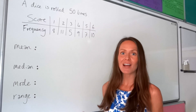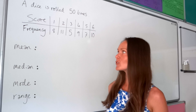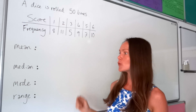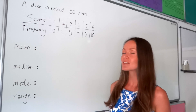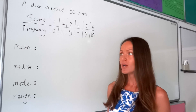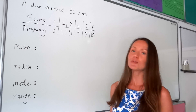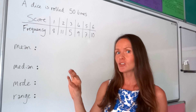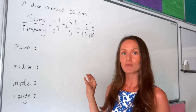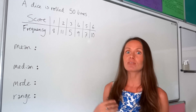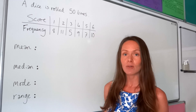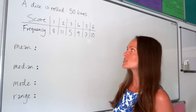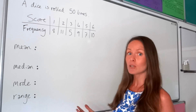Hey guys, I'm a maths prof and today I'm going to show you how to calculate the mean, median, mode and the range when you're given something called a frequency table. Hopefully you already know how to work out these averages when you're given just a small list of numbers. When that list gets really long, it's not very practical to write it out, so that's when we start using frequency tables.